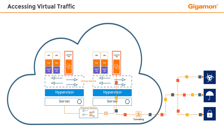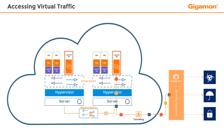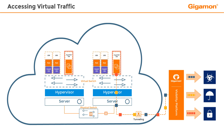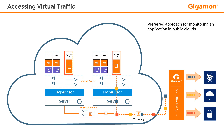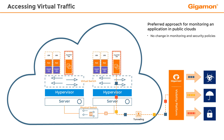Before reaching the physical tools, the traffic can be made to pass through a visibility fabric so that only the right traffic is sent to the right tool. This is the most preferred approach because the existing monitoring and security profiles are unchanged and no new tools are required.